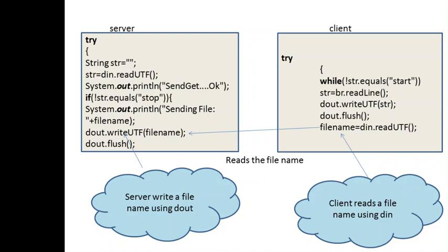This is the next video about a client and server. Here, a request is made from the client to establish the connection with the server. The IP address is given by the client, the server establishes the connection, and then the filename is given at the server side. The filename is accepted, and using dout it writes the filename to the DataOutputStream. This filename is read at the client side using din, which is the DataInputStream.